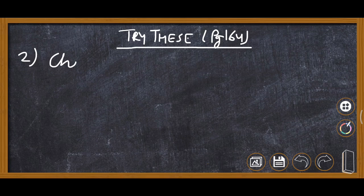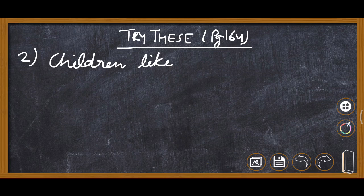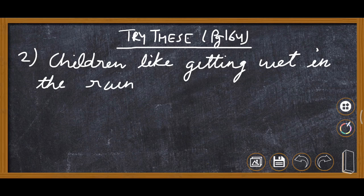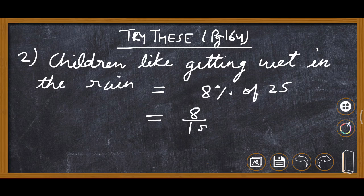Children of a class of 25 like getting wet in the rain equals 8 percent of 25. So here we will write 8 percent of 25 students. So 8 percent will be 8 upon 100 multiply by 25. Now remove by 4: 4 2s are 4, 25s are, cut 25 by 25.